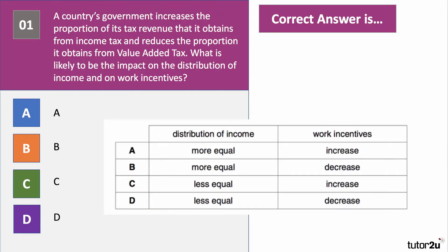Question one. A country's government increases the proportion of its tax revenue that it gets from income tax and reduces the proportion that it gets from VAT. What is likely to be the impact on the distribution of income and the impact on work incentives? Have a go at question one — press that pause button.